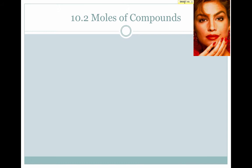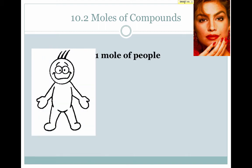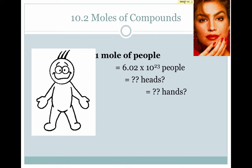When dealing with moles of molecules making up a compound, it's important to realize that we can talk about the atoms in the molecules as well as the molecules themselves. Take an example unrelated to chemistry: if we have a mole of people, we have 6.02 times 10 to the 23rd people. How many heads do we have? Since each person has one head, we have 6.02 times 10 to the 23rd heads. How many hands? Since each person has two hands, we have two times 6.02 times 10 to the 23rd hands. How many toes? Since each person has 10 toes, we have 10 times 6.02 times 10 to the 23rd toes.